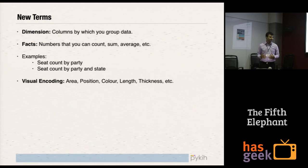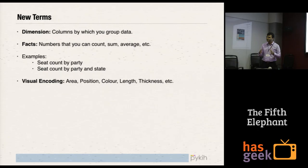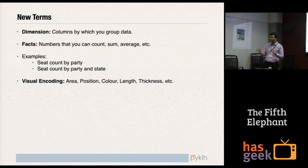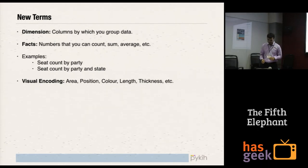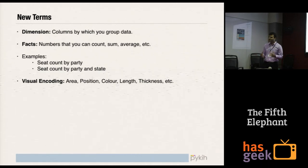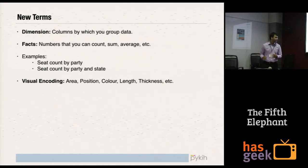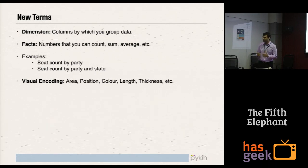Let's look at the terms. You have dimensions and facts. Dimensions are columns by which you aggregate data sets; facts are columns — generally numbers — which you count, sum, etc. You should always first look for dimensions and facts in your data set. For example: seat count by party — 'party' is a dimension and 'seat count' is a fact. Seat count by party and state — 'party' and 'state' are dimensions, 'seat count' is a fact.